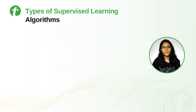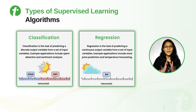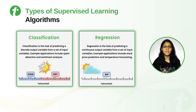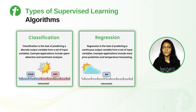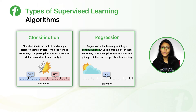Supervised learning algorithms are further divided into two categories: classification and regression. The main difference between classification and regression is that in classification we have a discrete output variable, whereas in regression we have a continuous output variable.